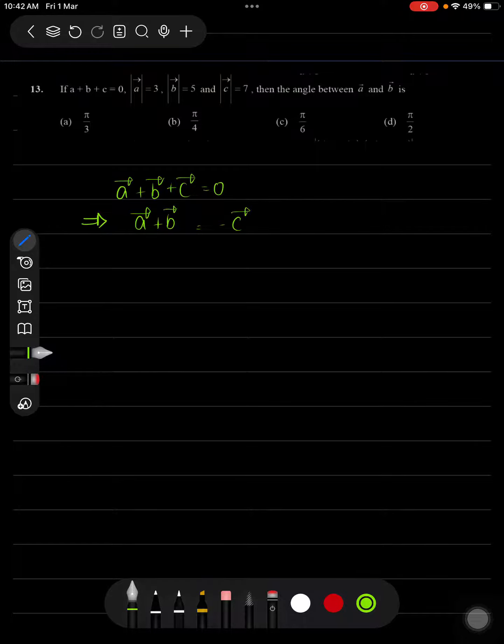Now apply modulus on both sides. |−c̅| will be the same which is 7 according to the question, and this is the root of a²